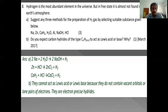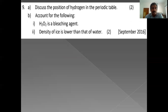Do you expect a carbon hydride of the type CnH2n+2 to act as Lewis acid or base? No, because they are electron-precise hydrates — they can neither donate nor accept electrons, so they cannot act as Lewis acid or Lewis base.